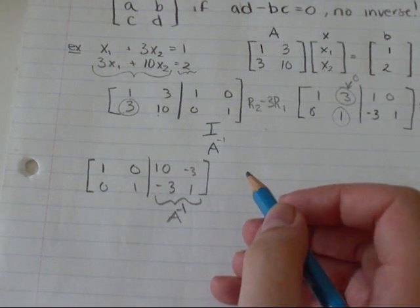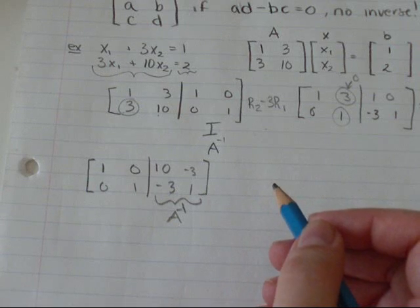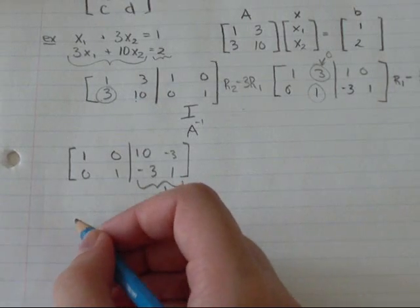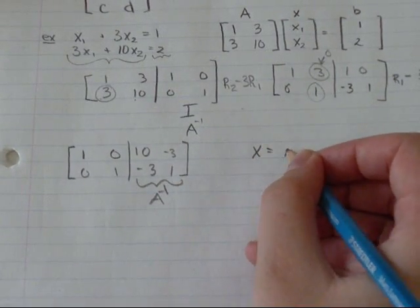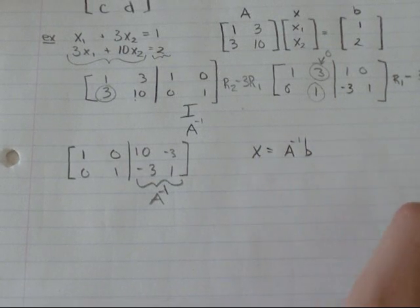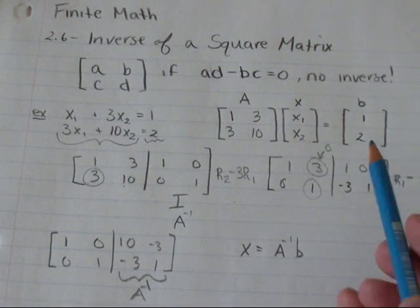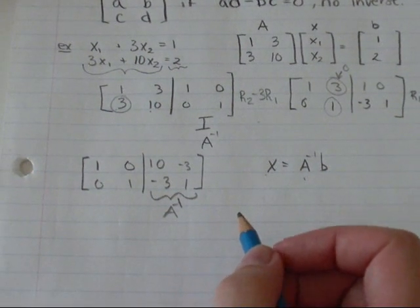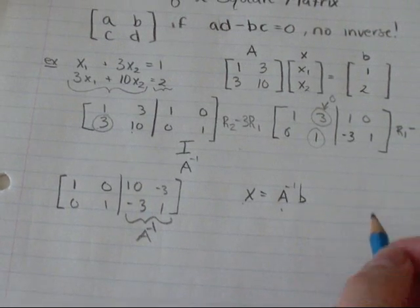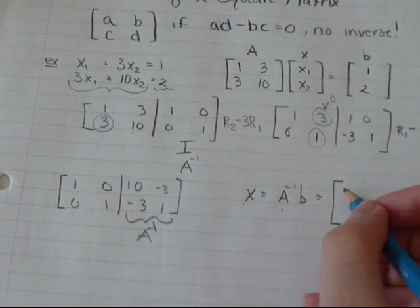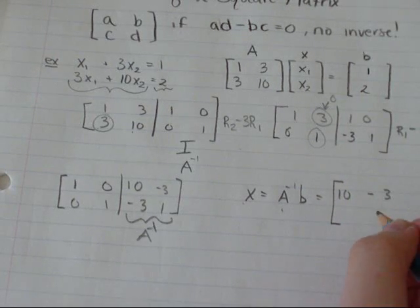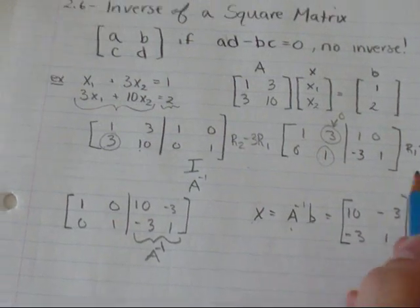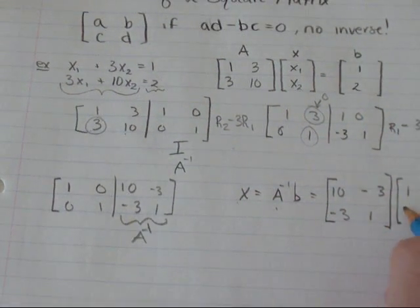So I am going to use the inverse to solve the system. So in doing that, you're going to work from the formula x equals A to the negative 1 times b. So I'm going to use my b from up here. I'm solving for x and I just found my A inverse. So that makes it my A inverse is 10, negative 3, negative 3, 1 times b from up here, which was 1, 2.